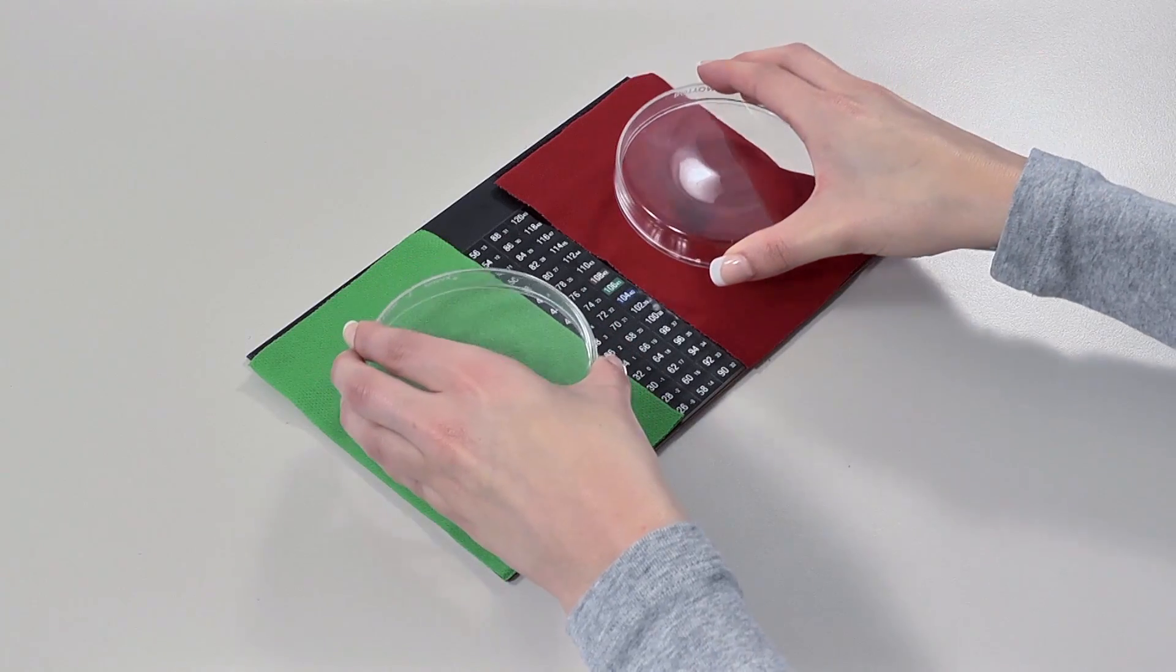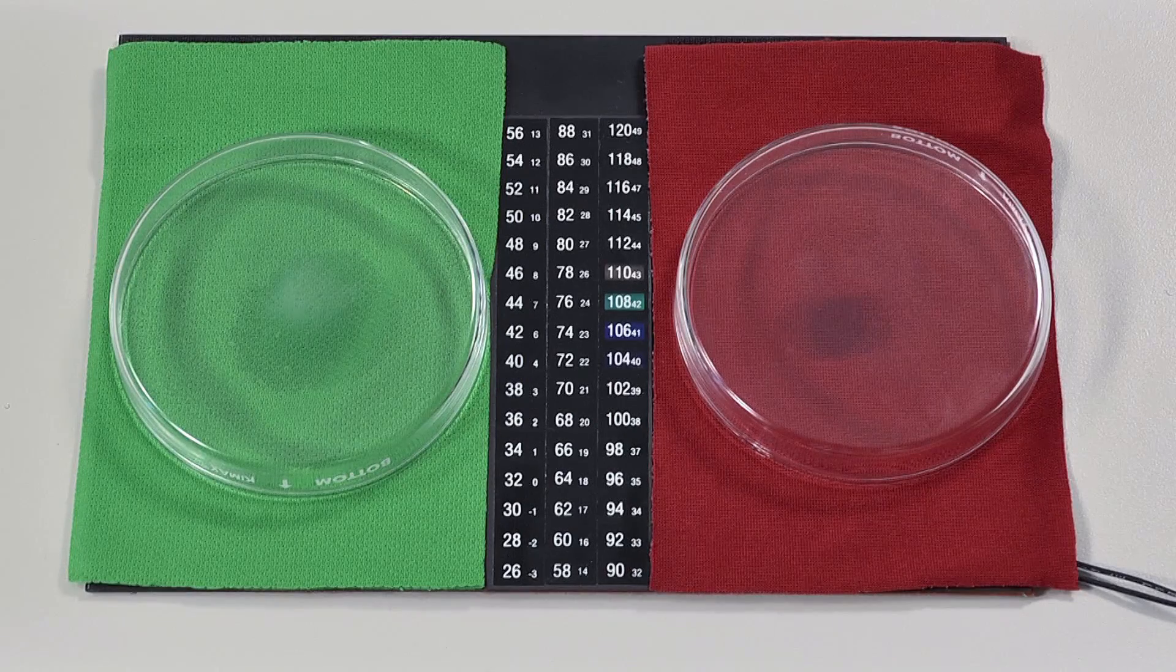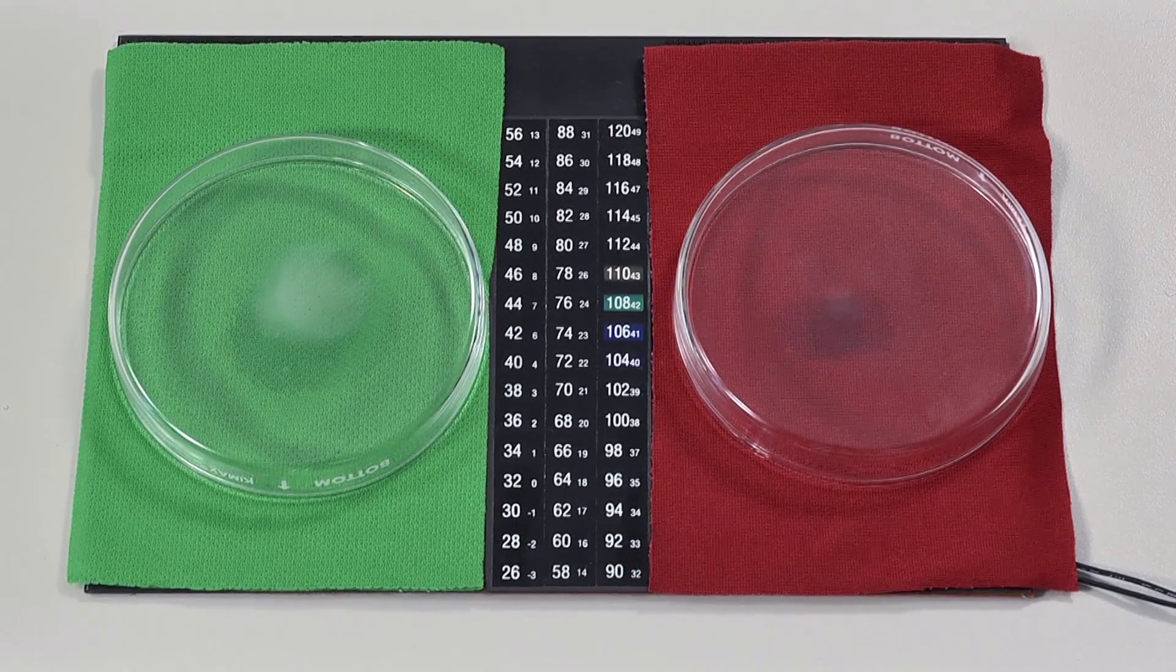By placing these petri dishes on top, we can clearly see that the moisture vapor escapes much faster from the Kokona fabric compared to the other leading brand.